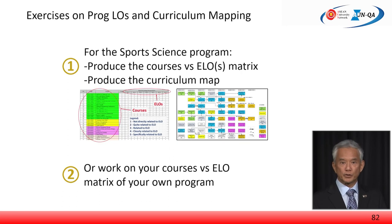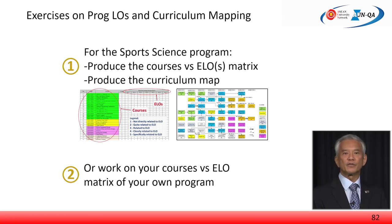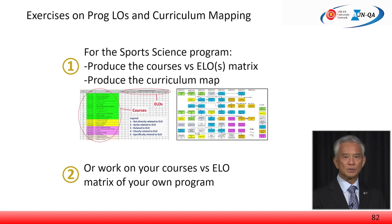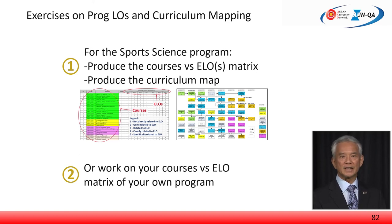We come to the last part of Module 3, where we extend from the previous exercise of revising the expected learning outcomes. You should now have about four to five well-crafted programme ELOs, either for the fictitious sports science programme of the AUN University or for the programme of your choice. The next steps are to produce the courses to ELO matrix or MAP, and to produce the curriculum MAP. The sports science degree takes four years or eight semesters to complete; each course is normally worth three credits, and so on.